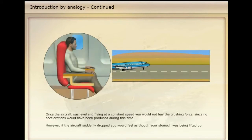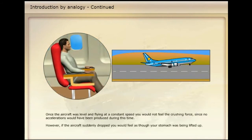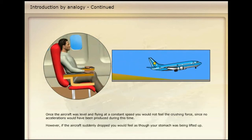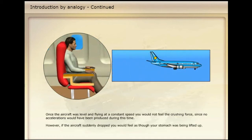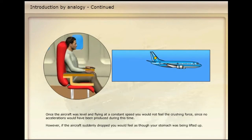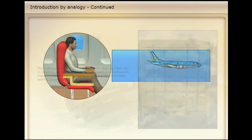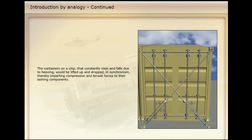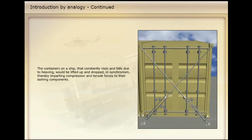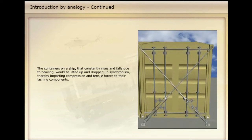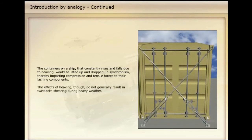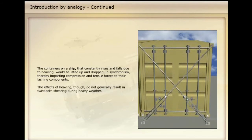Once the aircraft was level and flying at a constant speed, you would not feel the crushing force, since no accelerations would have been produced during this time. However, if the aircraft suddenly dropped, you would feel as though your stomach was being lifted up. The containers on a ship that constantly rises and falls due to heaving would be lifted up and dropped in synchronism, thereby imparting compression and tensile forces to their lashing components. The effects of heaving, though, do not generally result in twist locks shearing during heavy weather.